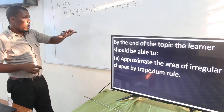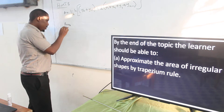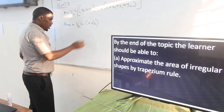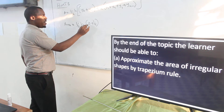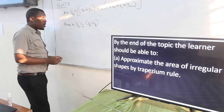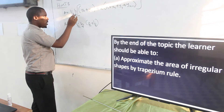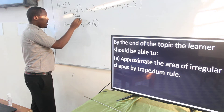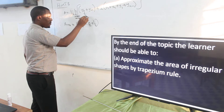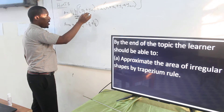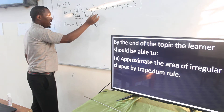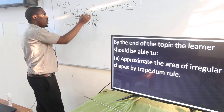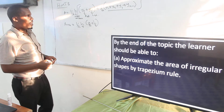Remember in Form 1 we talked about the area of the trapezium: Area = ½ × h × (a + b), whereby a and b are the lengths of the trapezium and h is the height. So in our trapezium rule, h is going to be the width of the trapezium, which must be uniform. Then y₀ and yₙ are the first and last heights. The other heights in between are multiplied by 2, but the first one and the last one are not multiplied by 2.